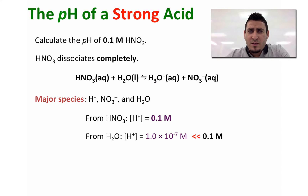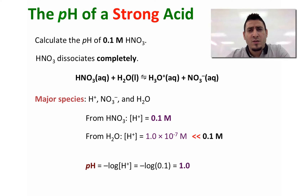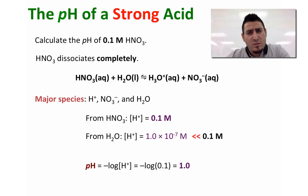We will only consider the concentration of H⁺ coming from the nitric acid, and therefore we can use this concentration to calculate the pH using the expression pH = −log[H⁺], which is equal to 1.0.